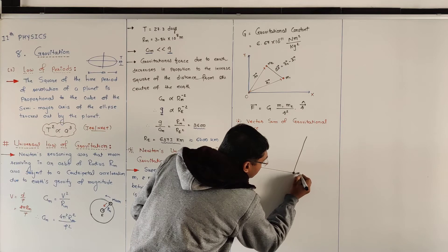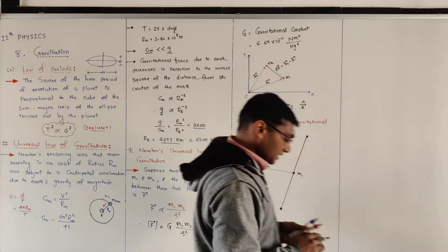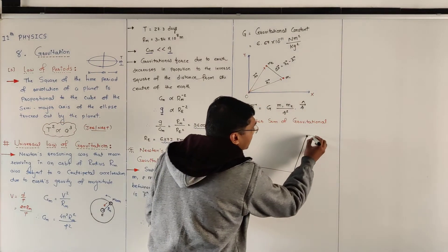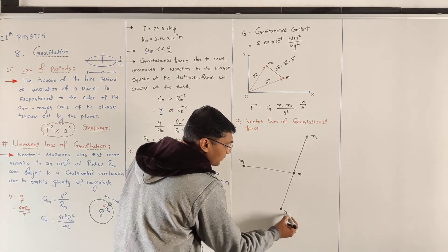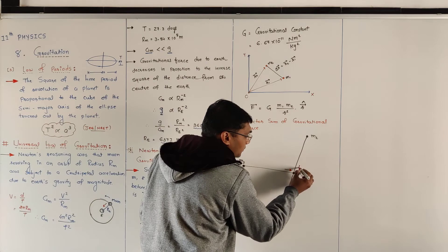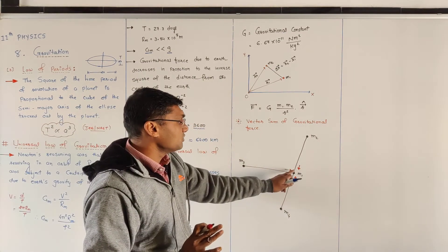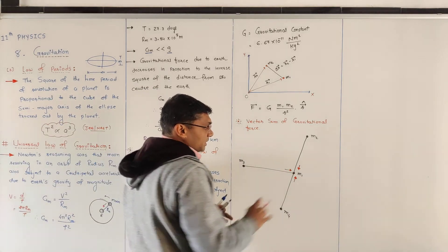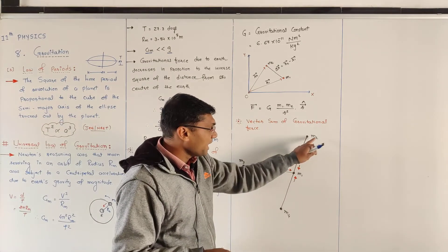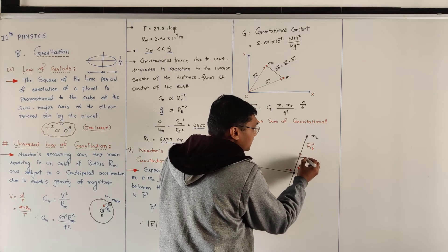Now consider multiple point masses. Suppose we have point masses M₁, M₂, M₃, and M₄. We want the vector sum of all forces on point mass M₁. The force by M₂ on M₁ is written as F₁₂, with position vector r₁₂. If reversed, it becomes −r₂₁. Similarly, the force by M₄ on M₁ is F₁₄, with position vector r₁₄, or −r₄₁ in the reverse direction.